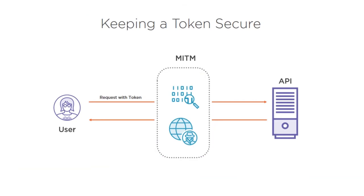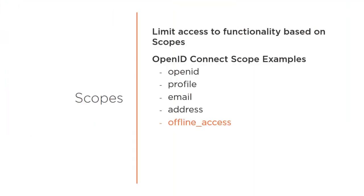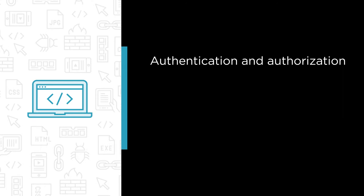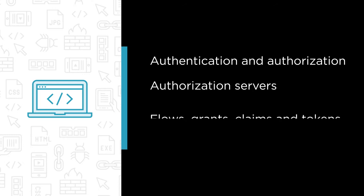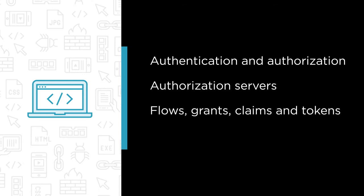In this course we're going to learn all that we need to know about securing an ASP.NET Core application using OAuth and OpenID Connect. You will learn a ton of interesting and extremely important things such as: what's the difference between authentication and authorization? Why do I need an authorization server such as Identity Server or Auth0? What are flows, grants, claims, and tokens?